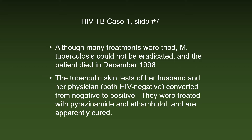Although many treatments were tried, MTB could not be eradicated and the patient died in December 1996. The tuberculin skin tests of her husband and her physician, who were both HIV-negative, converted from negative to positive. They were treated with pyrazinamide and ethambutol and are apparently cured. The dramatic difference in the course of the two infected HIV-negative contacts, who remained asymptomatic, and the AIDS patient, who died, shows the importance of an intact immune system for the defense against MTB.